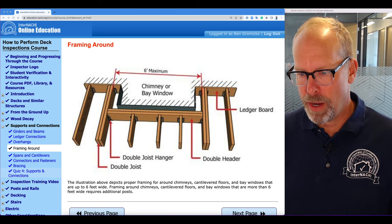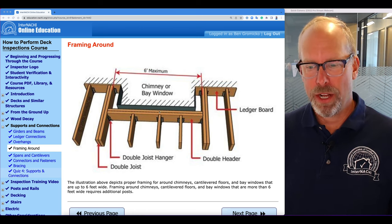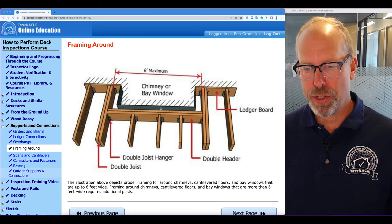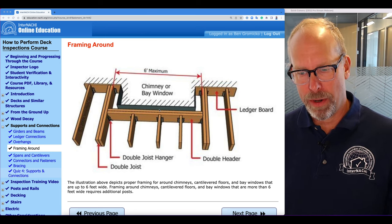So look for a cantilevered floor that's not attached to the deck ledger. The deck ledger shouldn't really attach to a cantilevered floor band rim joist.